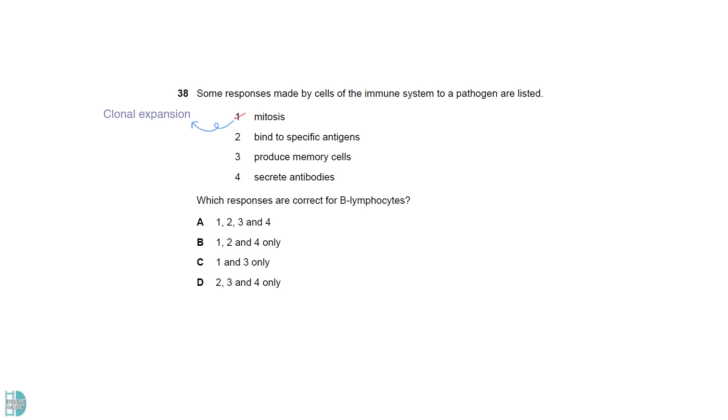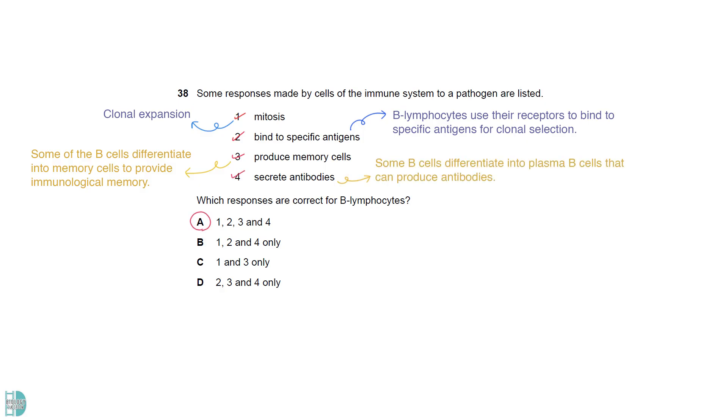B-lymphocytes carry out mitosis for clonal expansion. They use their receptor to bind to specific antigens for clonal selection. Following clonal expansion some of the cells will differentiate into memory cells to provide immunological memory. Some of the cells differentiate into plasma B cells that can produce antibodies.